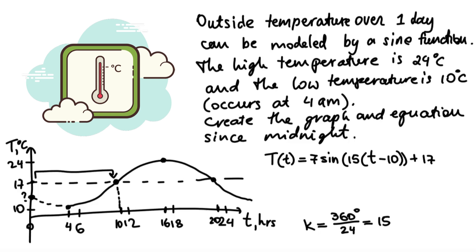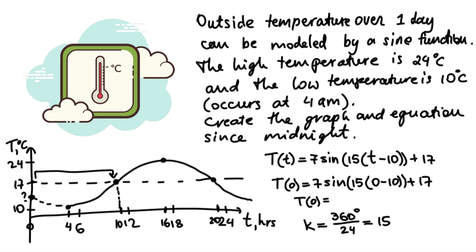The equation is T(t) = 7·sin(15(t − 10)) + 17. To find the temperature at midnight, evaluate T(0) = 7·sin(15(0 − 10)) + 17. Using order of operations — brackets first, then sine, then multiply by 7, then add 17 — the temperature at midnight is 13.5 degrees. This value also repeats at 24 hours, and after 24 hours the cycle continues back to the lowest temperature at 4 a.m.